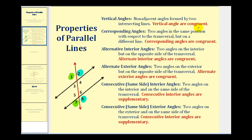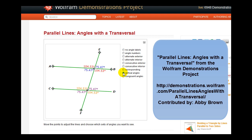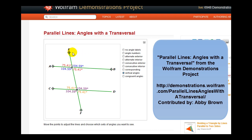Remember, the relationships stated are only true if the two lines intersected by the transversal are parallel lines. Let's take a look at a Wolfram demonstration to reinforce this idea. Here we see vertical angles in blue, red, orange, and purple. Notice, regardless of how the transversal cuts the two parallel lines, the angles remain congruent, or equal in measure.